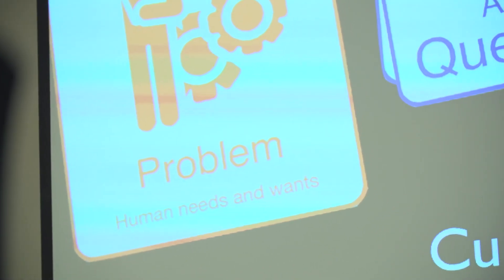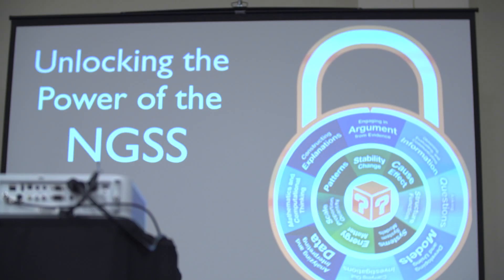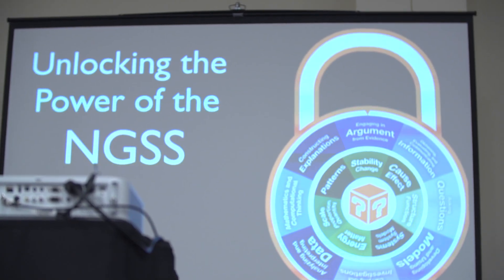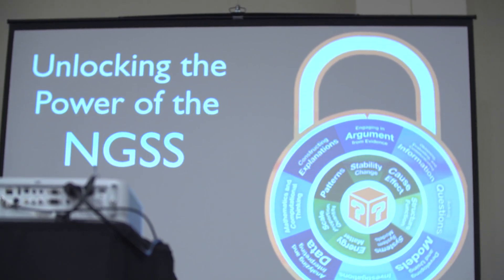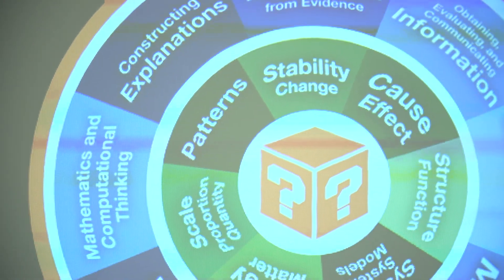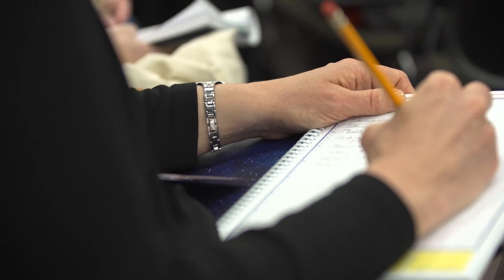If a phenomenon is something that we observe, then there are things that we do. Going through the three dimensions: there's practices, cross-cutting concepts, and disciplinary core ideas. The disciplinary core ideas is what we learn. The science and engineering practices is what we do. And the cross-cutting concept is how we think.